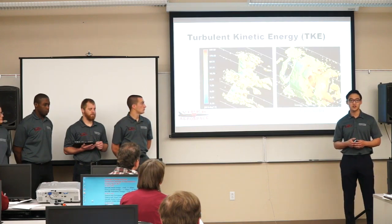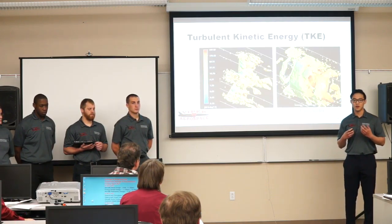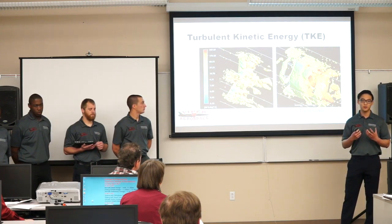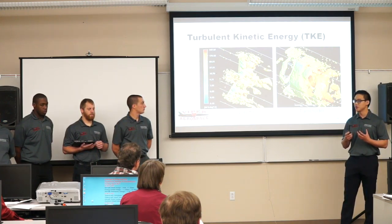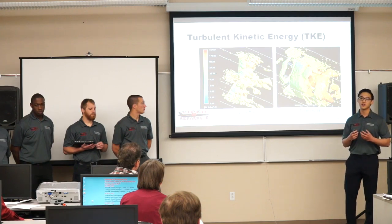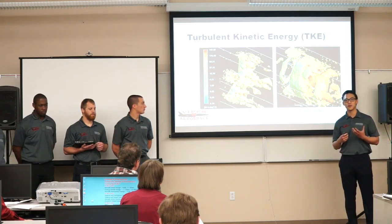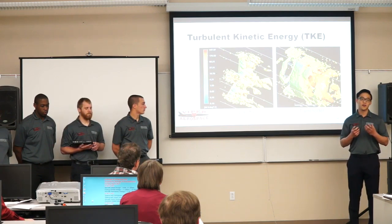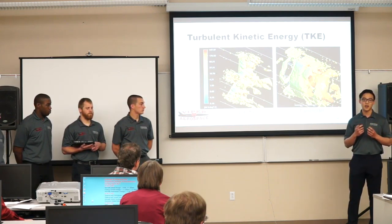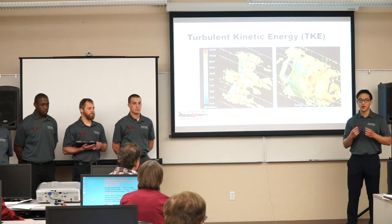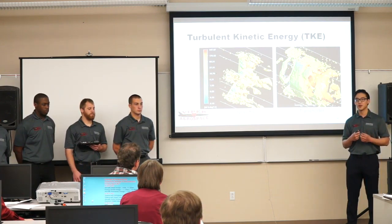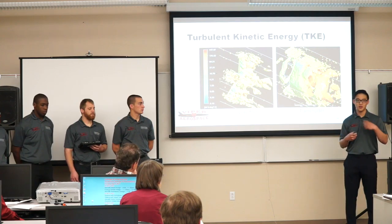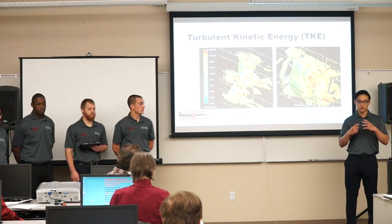Lastly, the turbulent kinetic energy — this was done with a 3D model to understand the turbulence in the system. Turbulent kinetic energy was approximately 450 foot-pounds per slug, and is concentrated along the centerline of the V gutters of the flame holder. This shows that we have a lot more turbulent flow within that region.